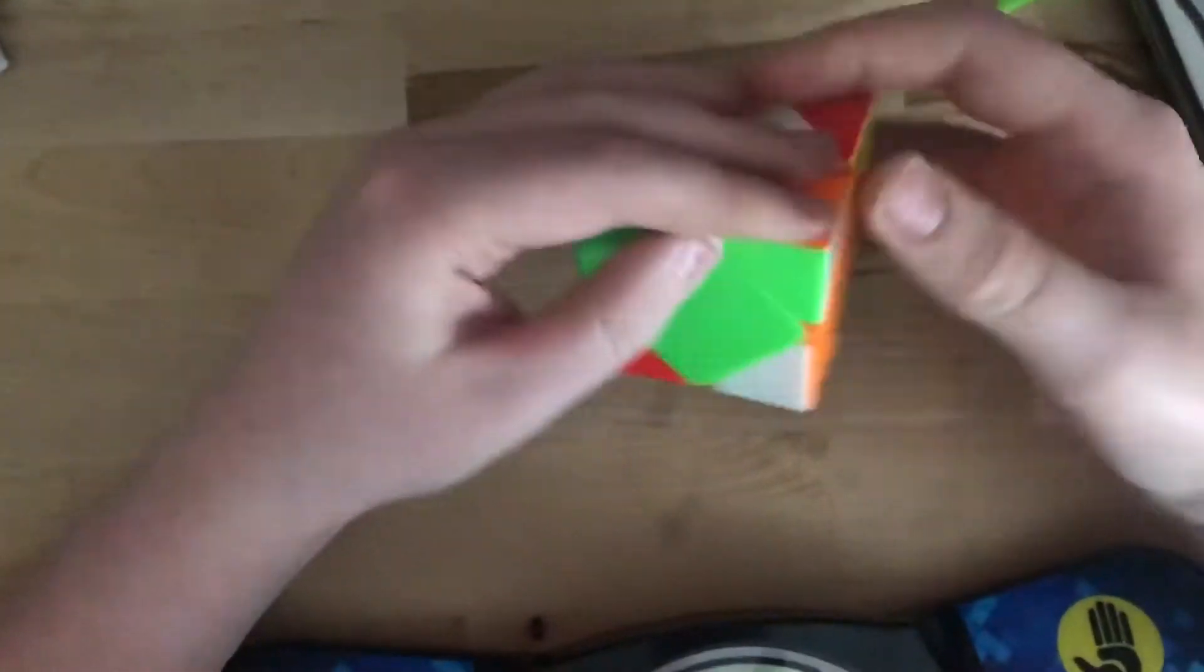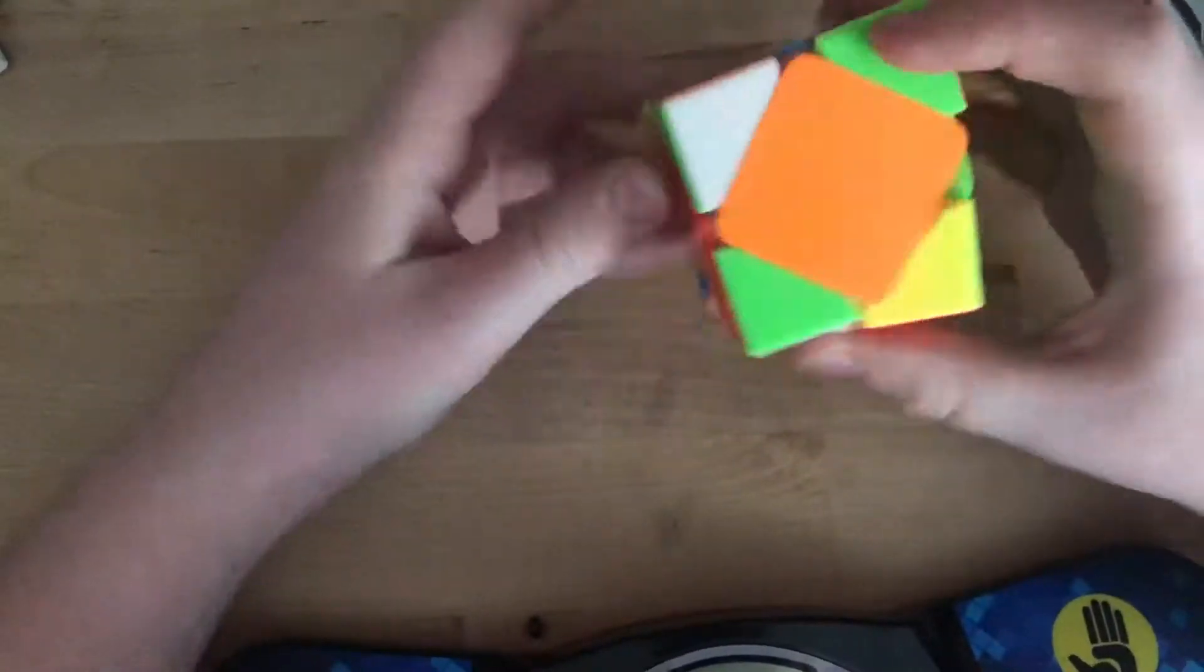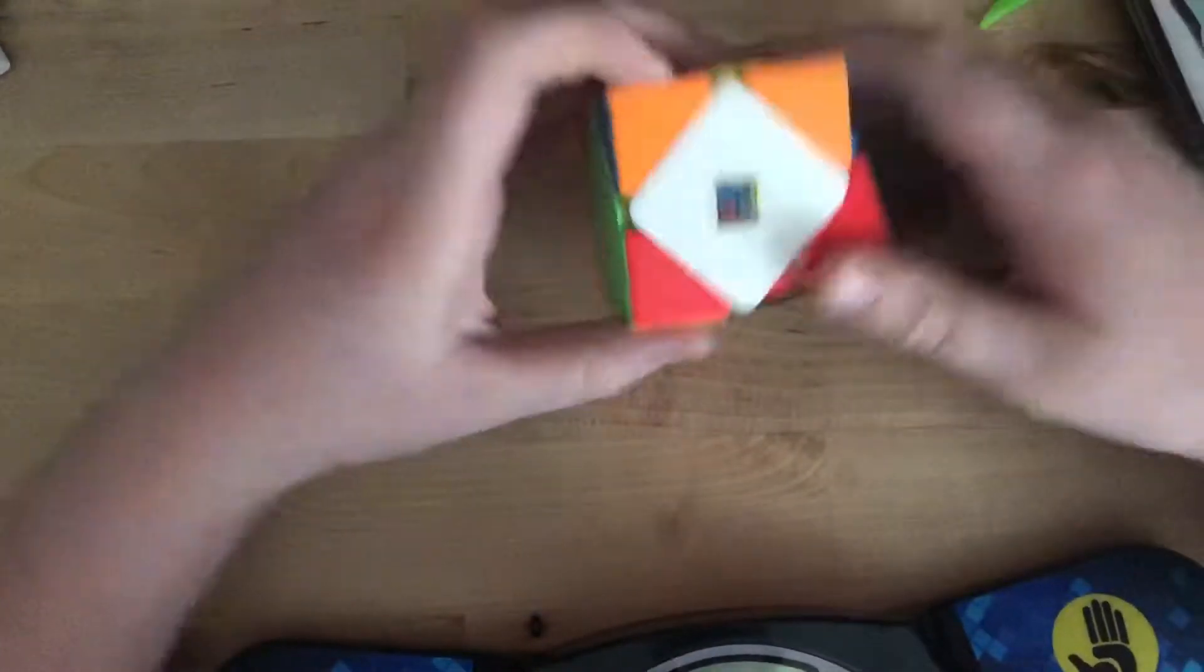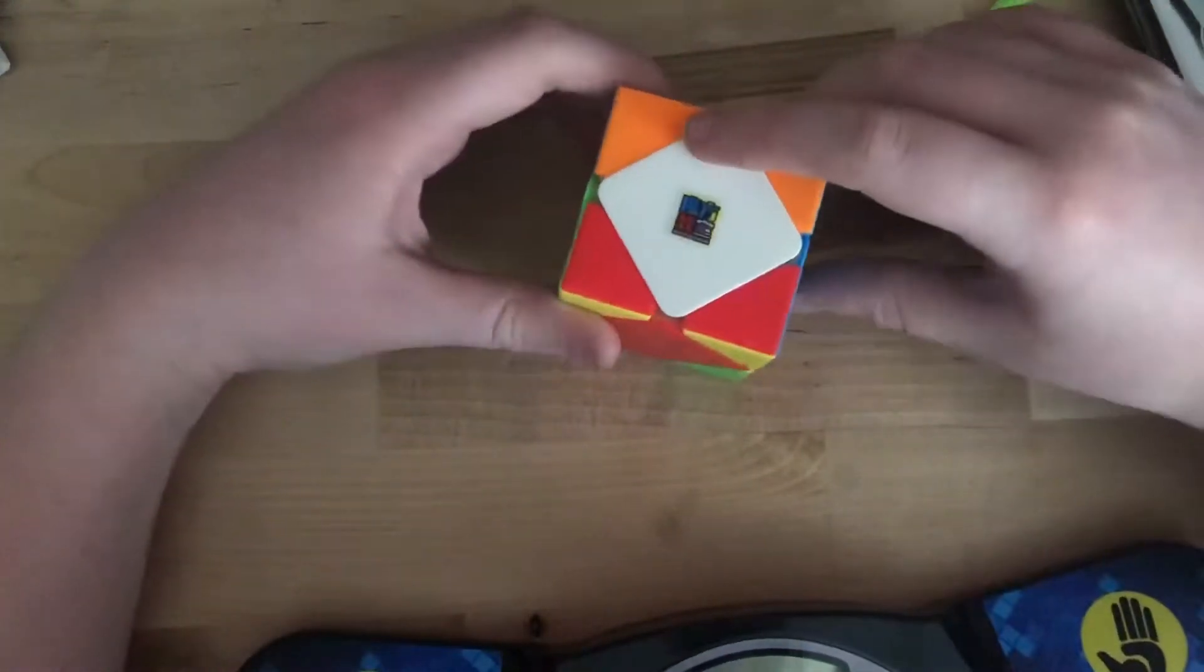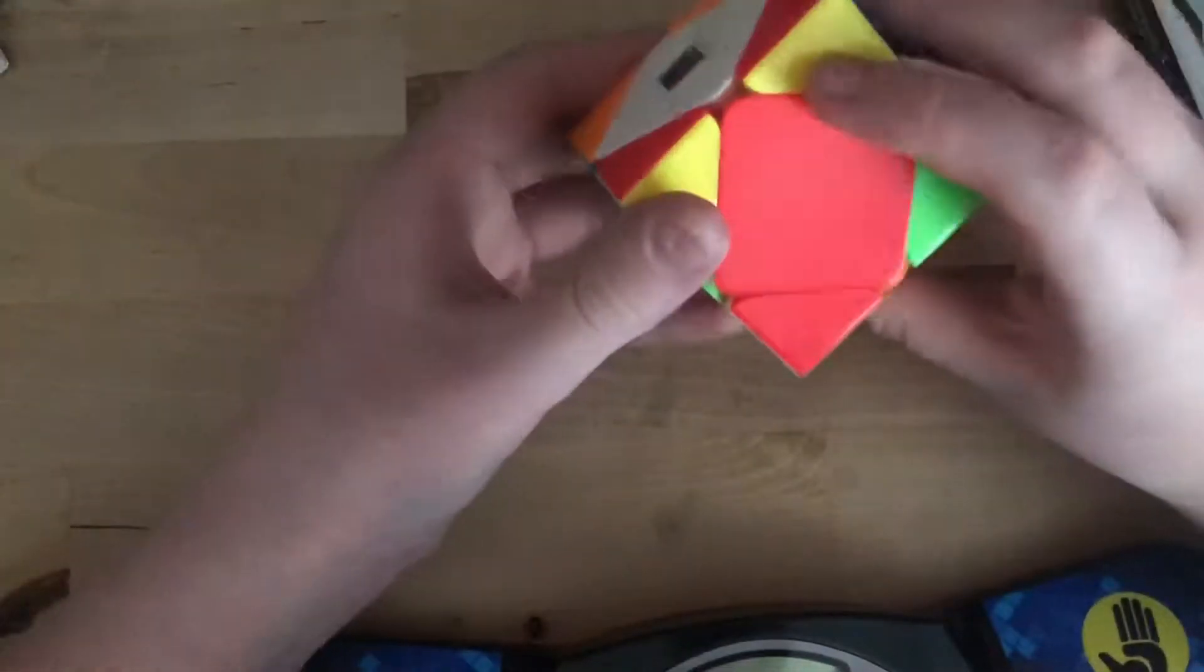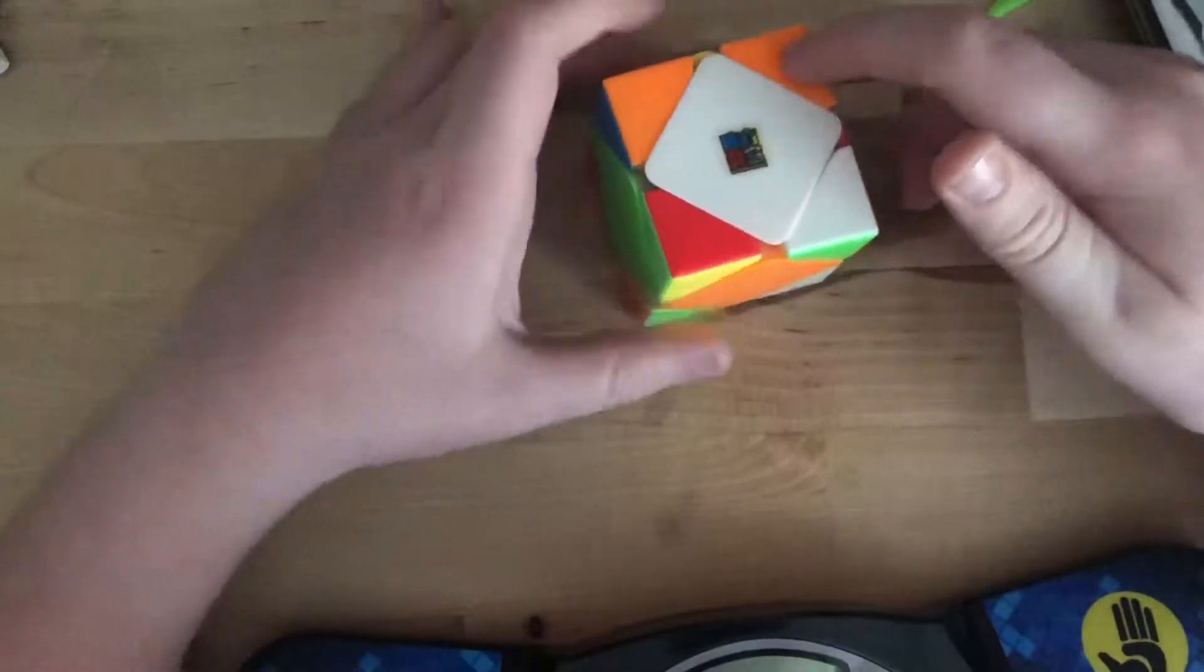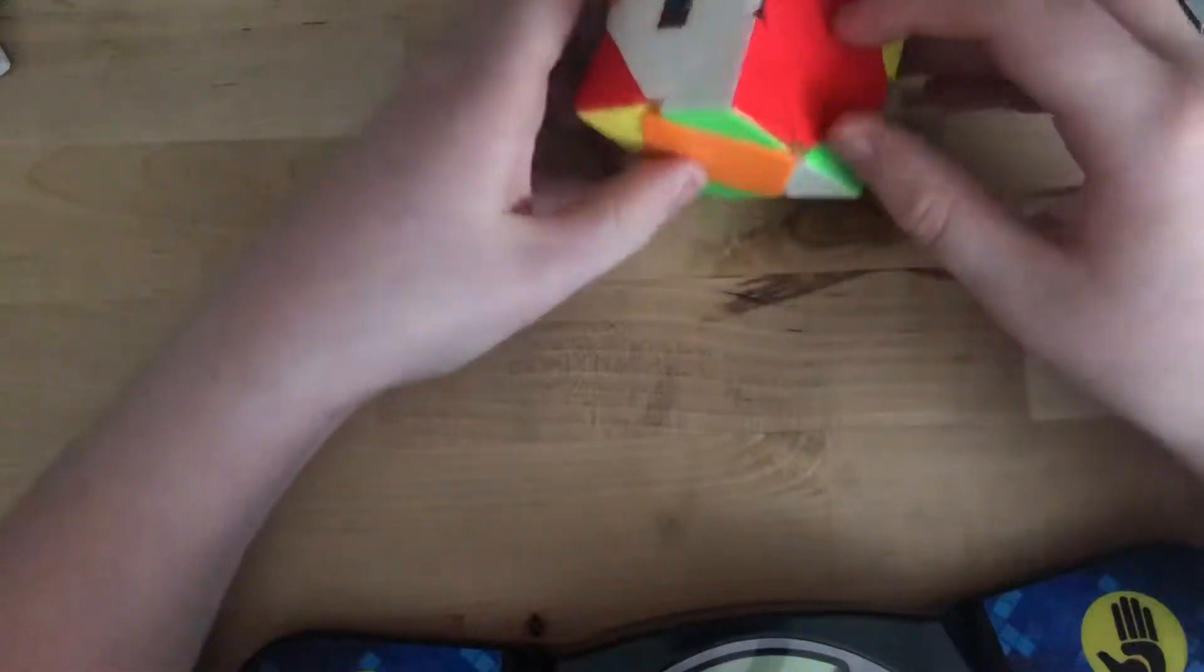Alright guys, now as you can see it is pretty mixed up and we can start the solve. So first thing you want to do, find the white center because that's what we'll be solving first. Now find your first corner thing and find the easiest one and move it up. Now this will be the green side and this will be the red side. The centers don't matter right now because these can be moved around easily.